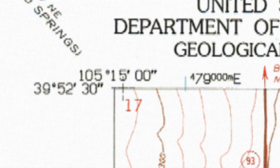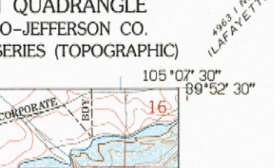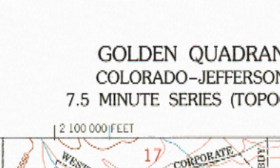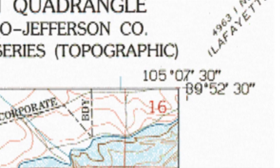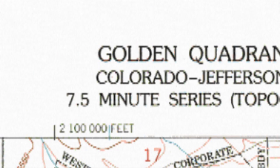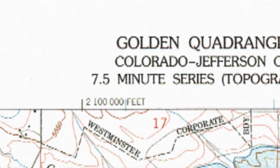We have changed longitude across the map, and the difference is 7.5 minutes of arc. Look at what we saw under the title of the map — this is a 7.5-minute series. Does it work both ways? If we go down the right side of the map, the longitude is unchanged, and the latitude has gone from 39 degrees, 52 minutes, 30 seconds to 39 degrees, 45 minutes even — another 7.5 minutes of arc difference. This map covers 7.5 minutes of latitude from top to bottom, and 7.5 minutes of arc from left to right.